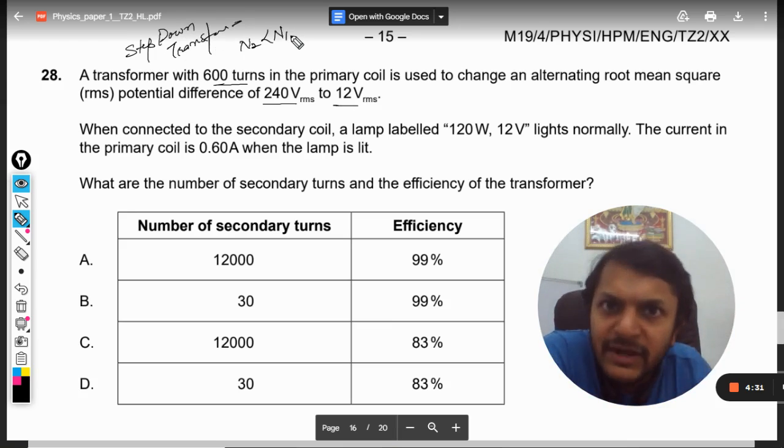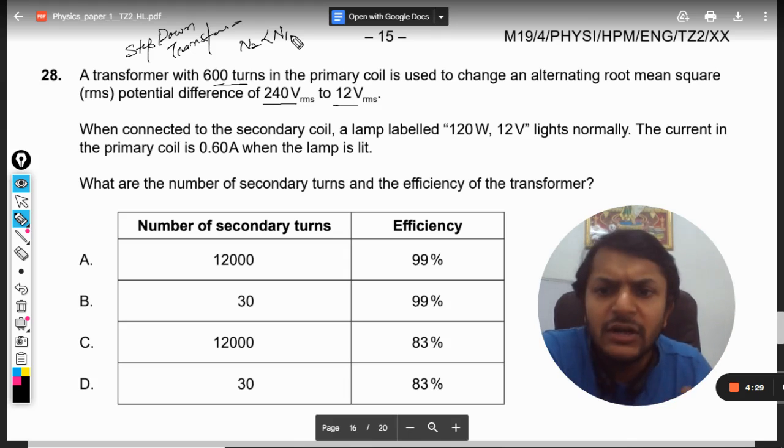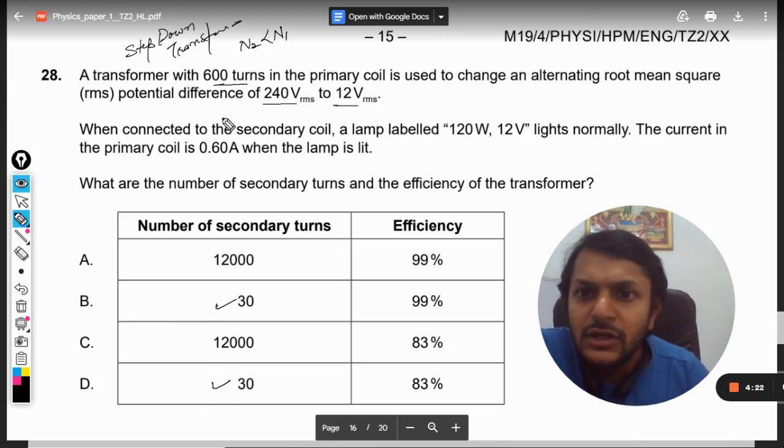Step down transformer, it means n2 will be lesser than n1. It is evident from the theory. We will go into the mathematics also. We will find the true number, but in just one go, by just reading this much statement, I can say that the answer is either B or D.